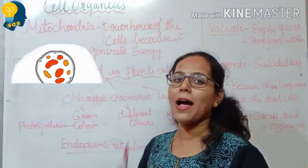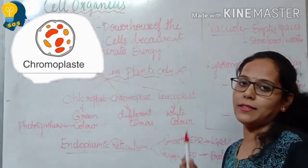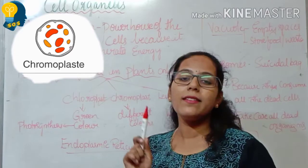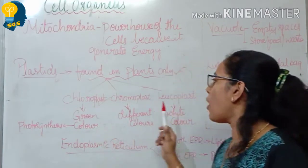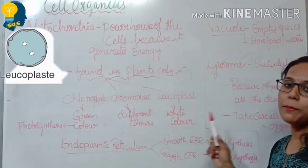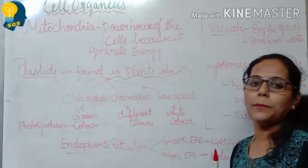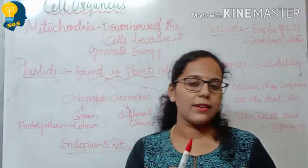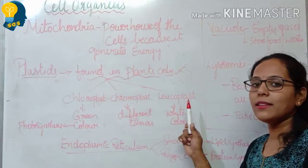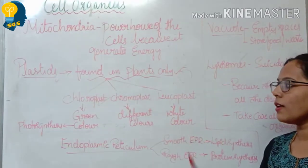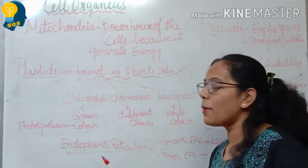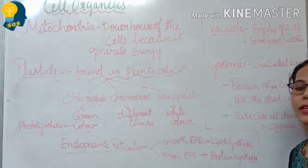Chromoplast are plastids which exist in different colours. Leukoplast are pigments which are white in colour. So the three types of plastids are the chloroplast, chromoplast, and leukoplast.